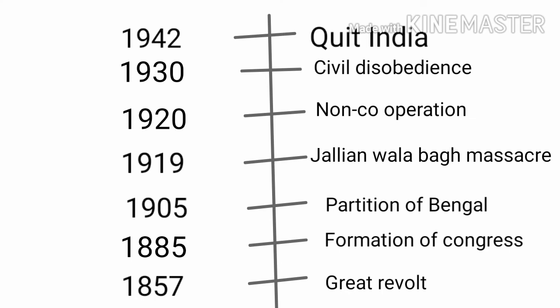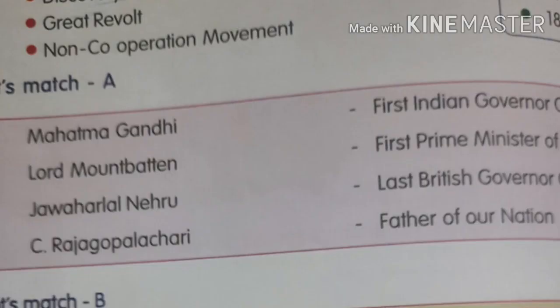The timeline events are: 1857 — Great Revolt; 1885 — Indian National Congress; 1905 — Partition of Bengal; 1919 — Jallianwala Bagh Massacre; 1920 — Non-Cooperation Movement; 1930 — Civil Disobedience Movement; 1942 — Quit India Movement; 1947 — Indian Independence.